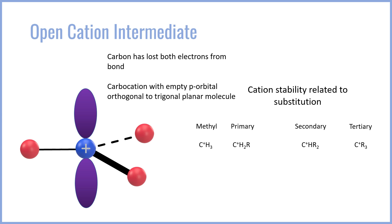A methyl cation is just CH3 with a plus on the carbon — that is to say, there are no bonds to the carbon other than carbon-hydrogen bonds. A primary carbocation has a single carbon-carbon bond in addition to the carbon-hydrogen bonds. Secondary has two carbon-carbon bonds, and a tertiary has three carbon-carbon bonds with no CH bonds.